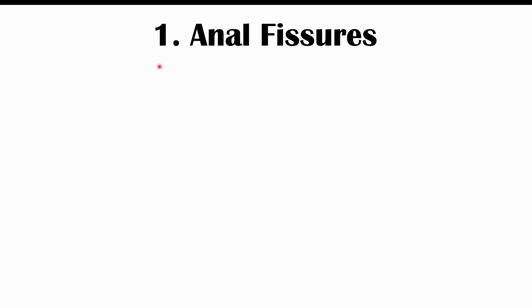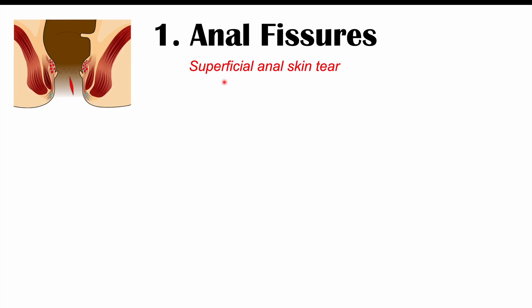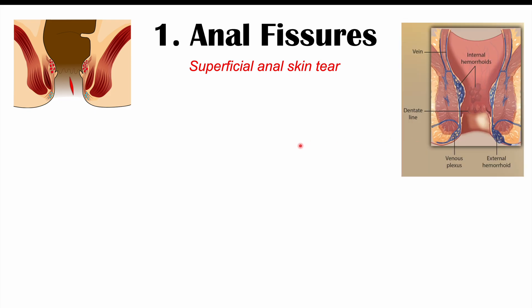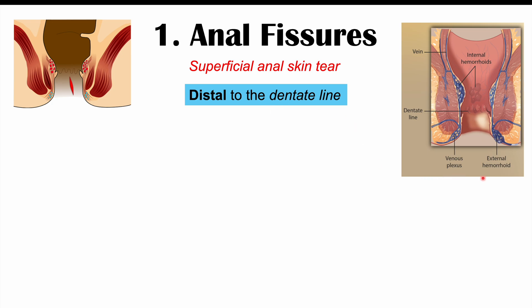The first condition we're going to discuss is anal fissures. Anal fissures are superficial anal skin tears — essentially the skin being torn open. These anal fissures occur distal to the dentate line. If we were to look inside the anal canal, there's a particular line called the dentate line, and anal fissures occur distally to this, closer to the opening as opposed to internally.